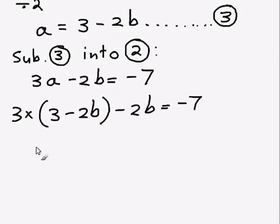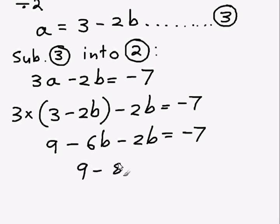What I can do now is multiply out the brackets. So 3 times 3 is 9, 3 times negative 2b is negative 6b, and minus 2b and it's still equal minus 7. So this becomes 9 minus 8b equals minus 7.